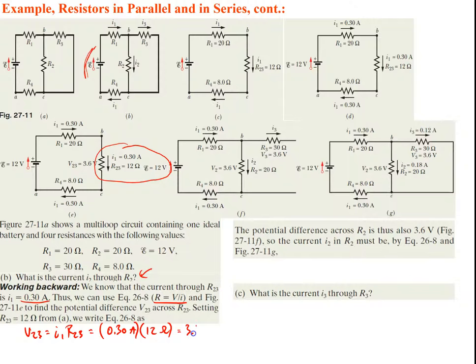Since R2 and R3 are in parallel, the voltage across both is 3.6 volts — the voltage is the same in parallel. So the current I2 through R2 is simply the voltage divided by the resistance of R2: I2 = 3.6 volts / 20 ohms = 0.18 amps.